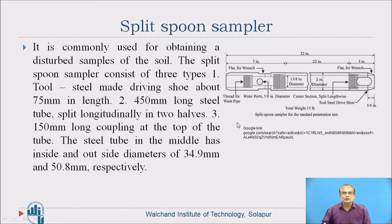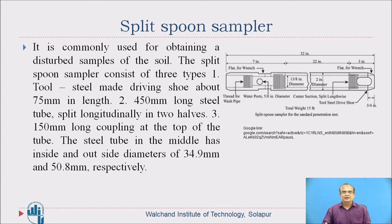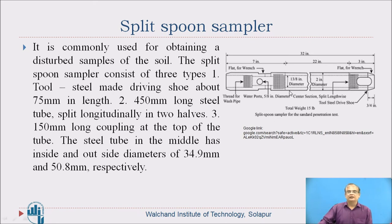One more method is the split spoon sampler, which is used for obtaining disturbed samples of soil. It consists of three parts: a tool steel driving shoe about 75 mm in length, a 450 mm long steel tube split longitudinally into two halves, and a 150 mm long coupling at the top. The steel tube has inside and outside diameters of 34.9 mm and 50.8 mm respectively. It splits into two parts, making it easier to extract the sample.